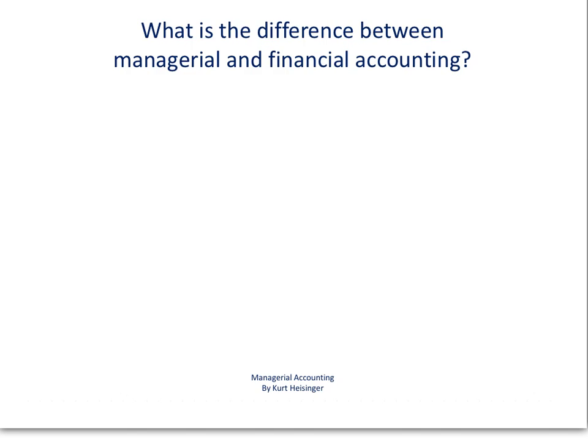This is Kurt Heisinger, accounting professor at Sierra College and author of Managerial Accounting. This video will cover the differences between Managerial Accounting and Financial Accounting. I am going to set up two columns here — the first will be M for Managerial Accounting, the second is F for Financial Accounting — and we are going to take a look at several different areas related to each of these types of accounting.